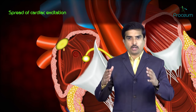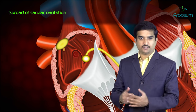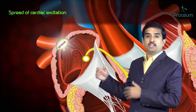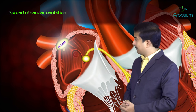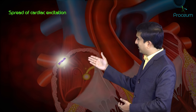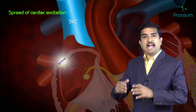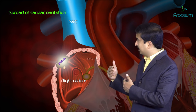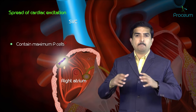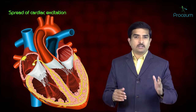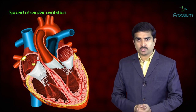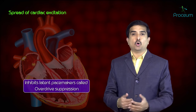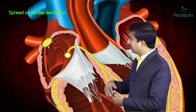Let us discuss the spread of cardiac excitation. The SA node is the origin of impulse, which is why it is called the primary pacemaker. It is located at the junction between the superior vena cava and the right atrium, epicardially. SA nodal fibers contain the maximum number of pacemaker cells, so the SA node produces the normal heartbeat. It is therefore called the dominant pacemaker and inhibits latent pacemakers — a phenomenon known as overdrive suppression.